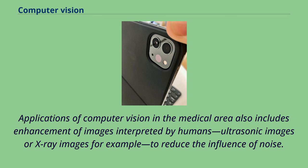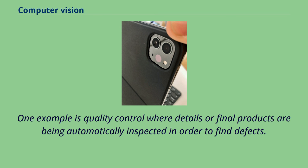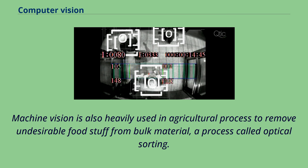A second application area is industry, sometimes called machine vision, where information is extracted for the purpose of supporting a production process. One example is quality control where details or final products are automatically inspected in order to find defects. Another example is measurement of position and orientation of details to be picked up by a robot arm. Machine vision is also heavily used in agricultural processes to remove undesirable food stuff from bulk material, a process called optical sorting.